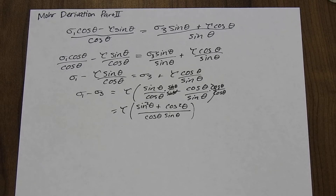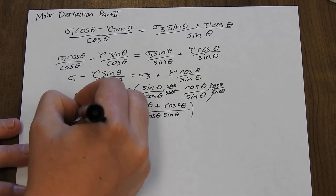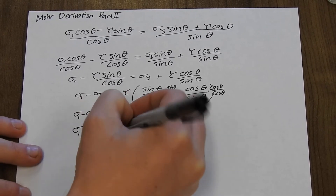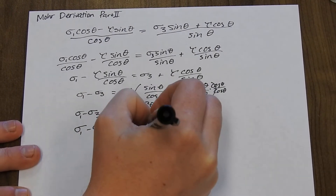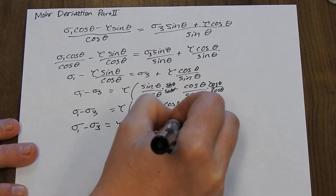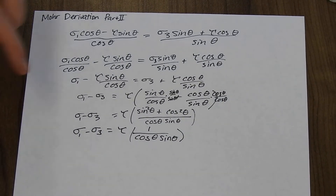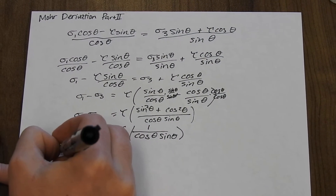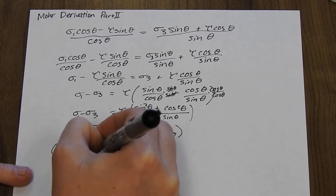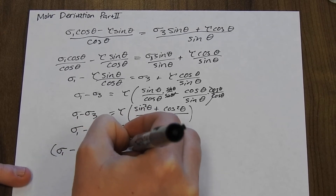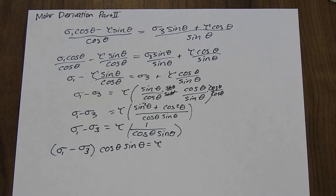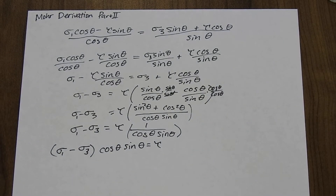With that identity applied, we can say sigma_1 minus sigma_3 equals tau times 1 over cosine(θ)sine(θ). Multiplying both sides by cosine(θ)sine(θ) gives us an expression for shear stress in terms of the principal stresses: tau = (sigma_1 minus sigma_3) times cosine(θ)sine(θ).